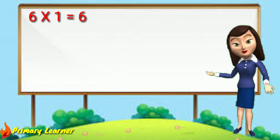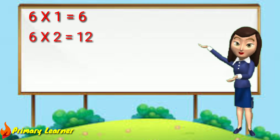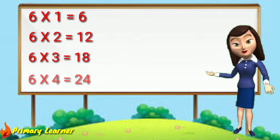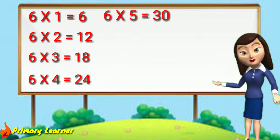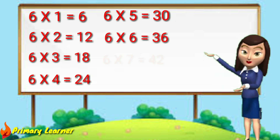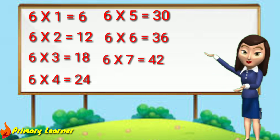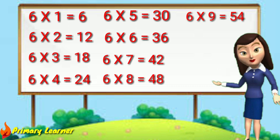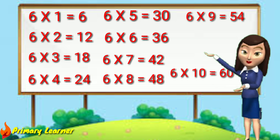6 ones are six, 6 twos are twelve, 6 threes are eighteen, 6 fours are twenty-four, 6 fives are thirty, 6 sixes are thirty-six, 6 sevens are forty-two, 6 eights are forty-eight, 6 nines are fifty-four, 6 tens are sixty.